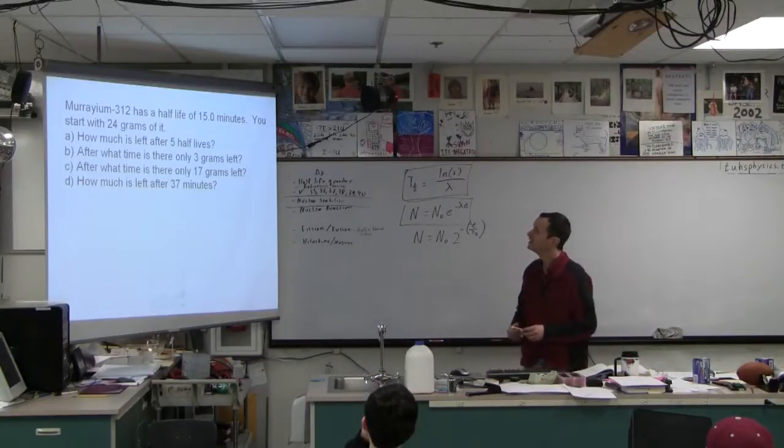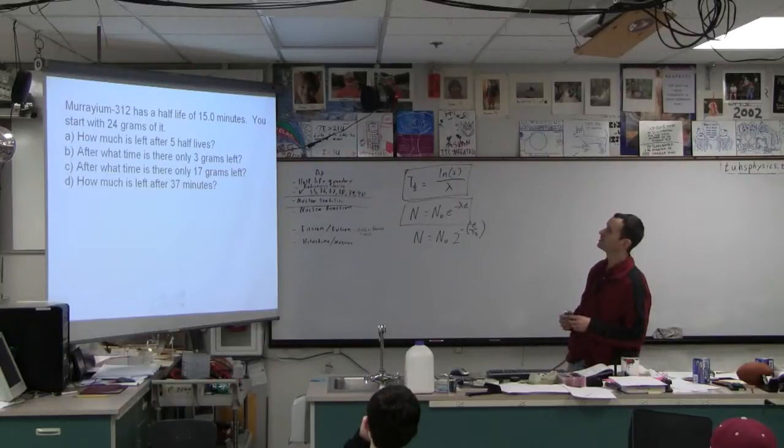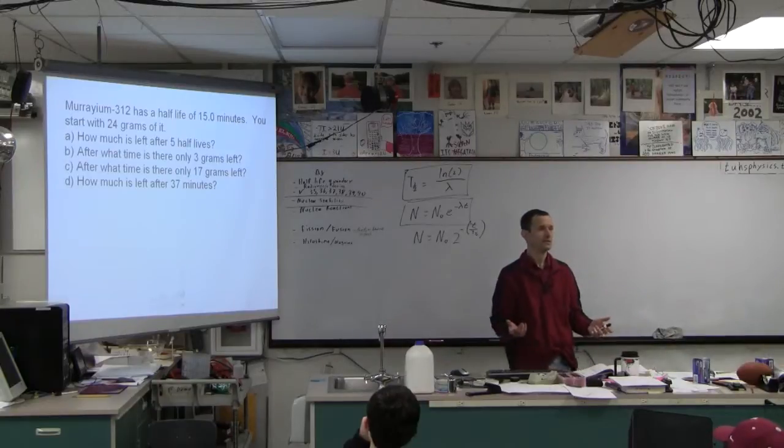Okay, so it's our quandary. Murriam has a half-life of 15 minutes. You start with 24 grams of it. How much is left after 5 half-lives? What's the answer? 0.75, right?